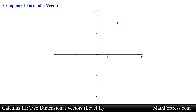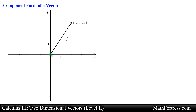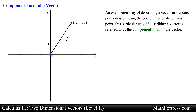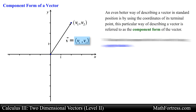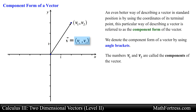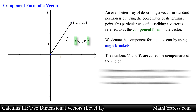We have seen that describing vectors using points is convenient, especially when the initial point is at the origin. An even better way of describing a vector is by using the coordinates of its terminal point. This is referred to as the component form of the vector, and we denote it using angle brackets. The numbers v sub 1 and v sub 2 are called the components of the vector. Note the similarity between denoting a point and denoting the component form of a vector — it is important to use parentheses for points and angle brackets for vectors in component form.